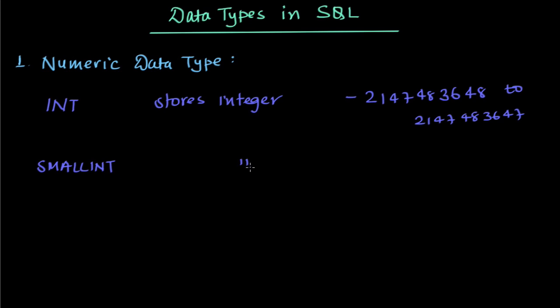Again it will store integer but the range will be less. So it can store minus 32,768 to plus 32,767.